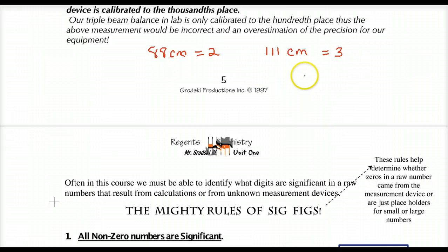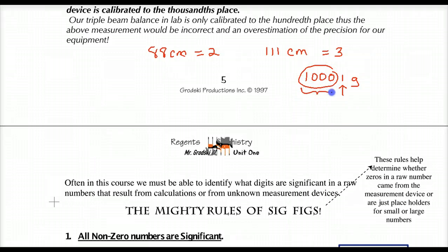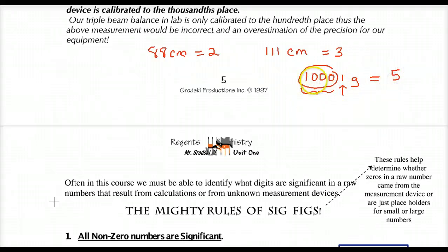But what if I gave you something like 100, 1,000, or 10,001 grams? You may ask, are those zeros significant? Yes, they are, because they're sandwiched between the two non-zero numbers. If you measured this — with this last digit being our guess — we would say all these numbers are significant. Anytime you see zeros sandwiched between integers, those zeros are significant. Therefore, we have a total of five significant figures there.